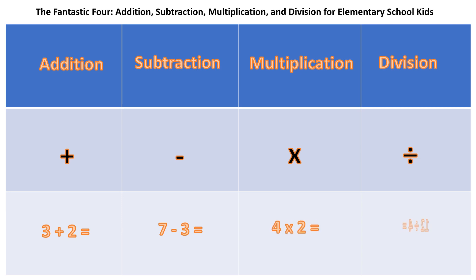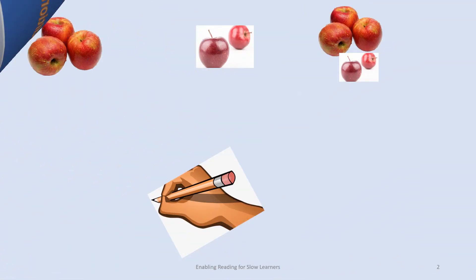1. Addition: The Joining Operation. Addition is all about putting things together or joining groups. It helps us find the total when we combine two or more numbers. For example,